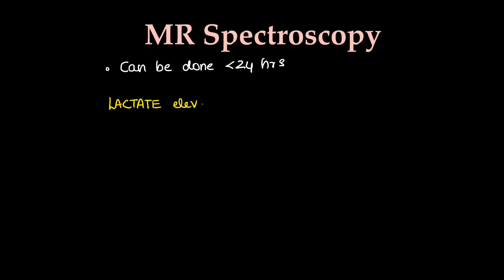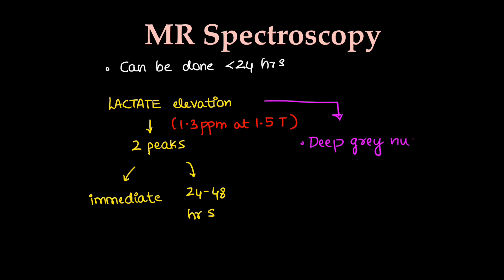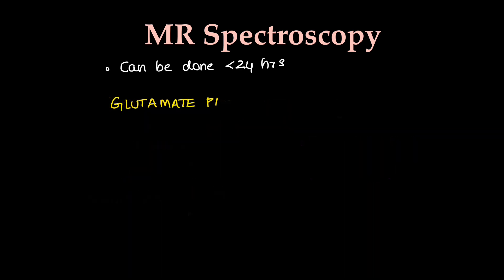This is briefly the use of MR spectroscopy in HIE. This can be used within 24 hours just like the diffusion sequence. There will be lactate elevation which shows 2 peaks: one immediately after damage, one 24 to 48 hours after damage. Peak will be at 1.3 ppm in 1.5 Tesla machine. Peak can be seen in deep grey nuclei and parieto-occipital lobes, also in watershed zones. Another peak to look for is the glutamate peak, which is at 2.3 ppm in 1.5 Tesla.